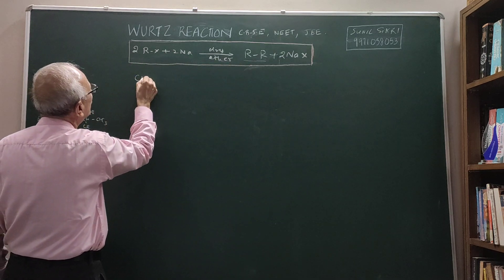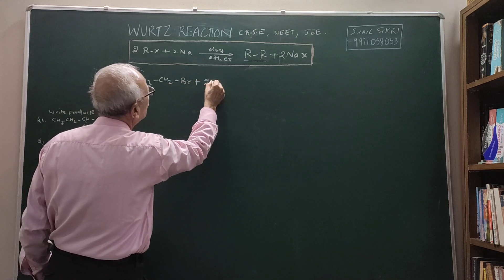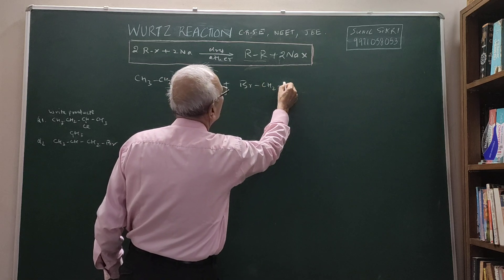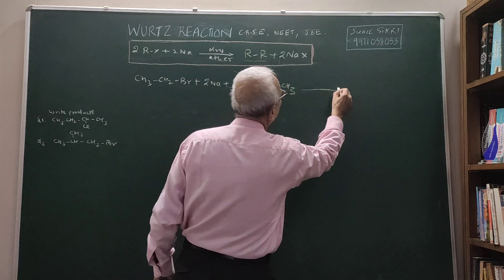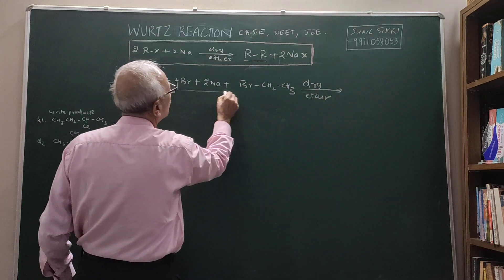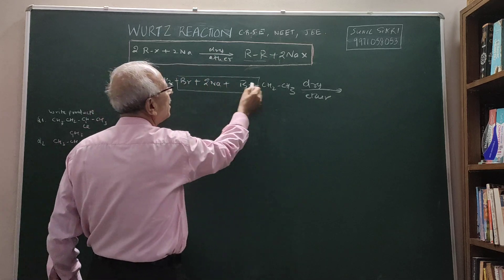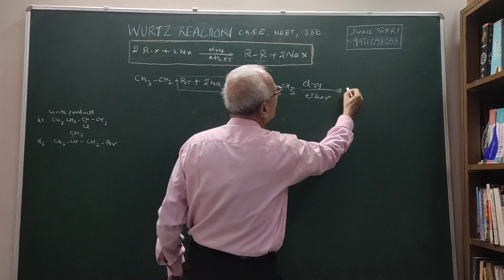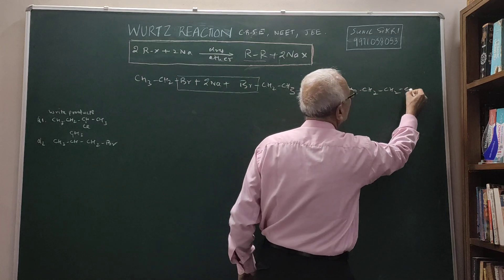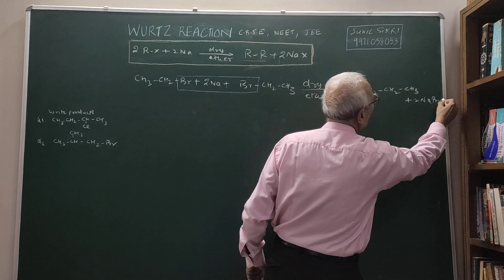For example, if I give you CH3CH2Br and react it with sodium in the presence of dry ether, what will be the product? You can see that NaBr is going to leave, and coupling is going to take place. The result is the formation of CH3CH2CH2CH3 plus 2NaBr.